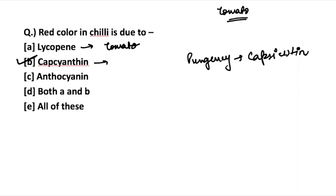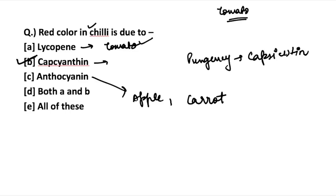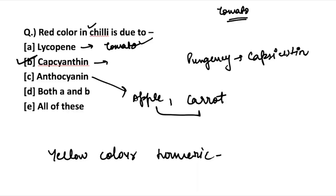Now regarding anthocyanin: the redness in apple and carrot is due to the presence of anthocyanin. Remember that the red color in fruits and vegetables is not due to just one enzyme — there are various enzymes and pigments. To recap: Lycopene for tomato, Capsicinethin for chili, and anthocyanin for apple and carrot. Now, can you tell me: the yellow color in turmeric is due to the presence of which enzyme? Mention your answer in the comment section below.